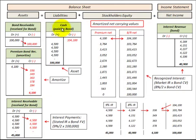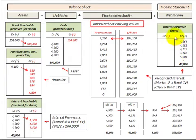In T-account form, I have the asset account shown here on the balance sheet, and cash is also an asset. On this side I show the interest revenue that we recognize each period on that bond, which is part of net income on the income statement.